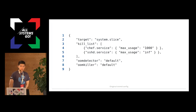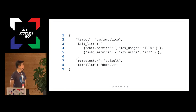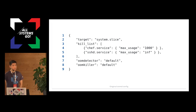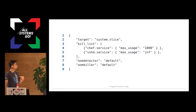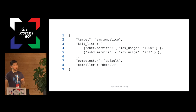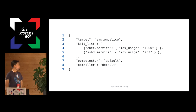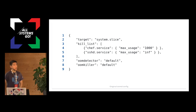This is the original OomD config that we're running with in production these days. As you can see, it's mostly just JSON — pretty straightforward. We're monitoring system.slice, the pretty non-essential system services. We have a kill list which is in order. What it says is: if the host OOMs and Chef is using more than 1,000 megabytes of memory, please kill Chef. And then never kill SSHD because you don't want to lose SSH access. We're using the default OomD detector and OomKiller plugins. If you had custom plugins, you would put the custom plugin name in there.